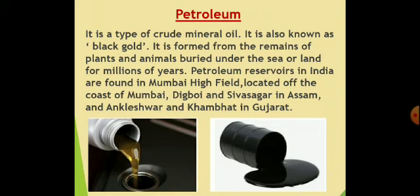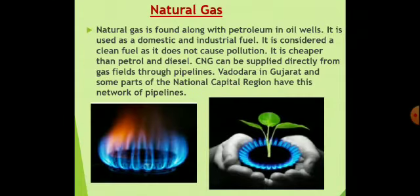Natural gas is found along with petroleum in oil wells. It is used as a domestic and industrial fuel. It is considered a clean fuel as it does not cause pollution. It is cheaper than petrol and diesel. CNG can be supplied directly from gas fields through pipelines. Vadodara in Gujarat and some parts of the national capital region have this network of pipelines.